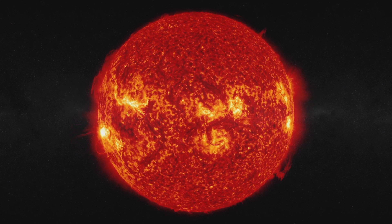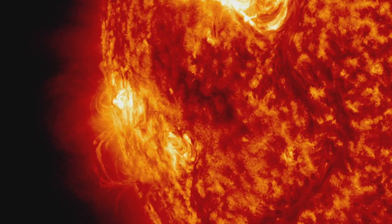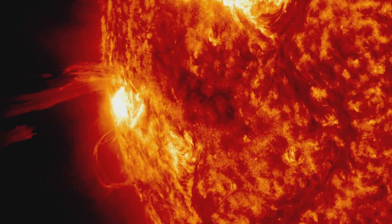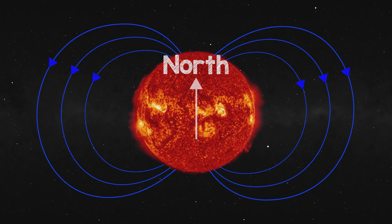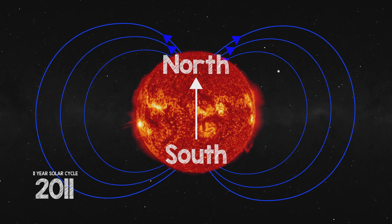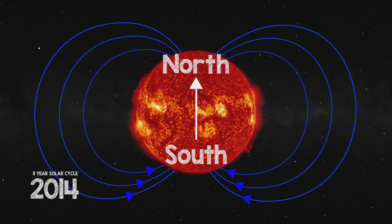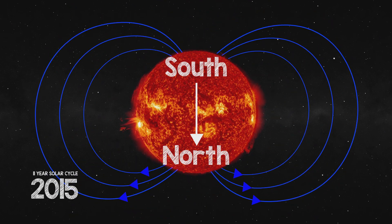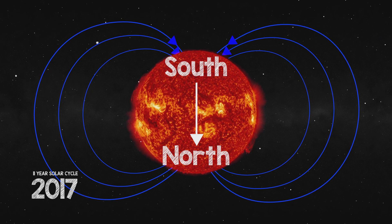Our sun is a huge ball of electrically charged hot gas. This hot gas moves, generating a powerful magnetic field. The sun's magnetic field goes through a cycle called the solar cycle. Every 11 years or so, the sun's magnetic field completely flips. This means the sun's north and south poles switch places.